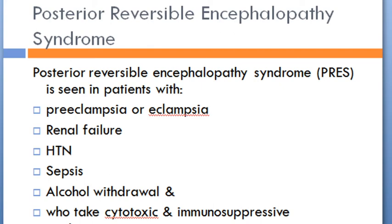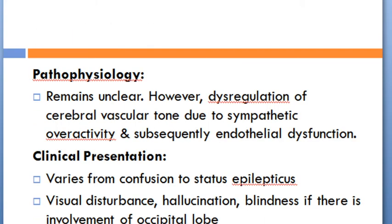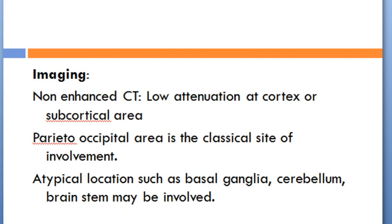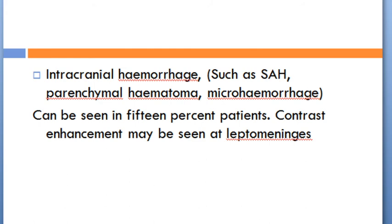Posterior reversible encephalopathy syndrome (PRES) is seen in patients with pre-eclampsia or eclampsia, renal failure, hypertension, sepsis, alcohol withdrawal, and those taking cytotoxic and immunosuppressive medications. Pathophysiology involves dysregulation of cerebral vascular tone due to sympathetic overactivity and subsequent endothelial dysfunction. Clinical presentation varies from confusion to status epilepticus, visual disturbances, hallucinations, and blindness if the occipital lobe is involved. On non-enhanced CT, low attenuation at the cortex or subcortical area in the parieto-occipital region is classic. Intracranial hemorrhage including subarachnoid hemorrhage, parenchymal hematoma, and microhemorrhage can be seen in 15% of patients.